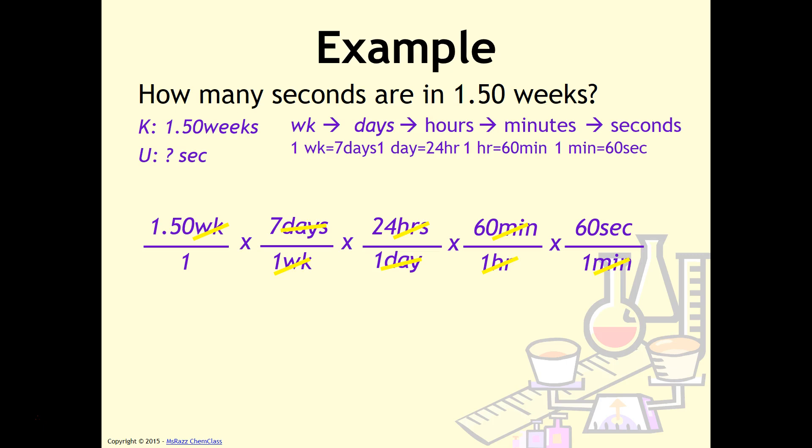Then you have to do your multiplication. So I'm going to multiply everything on top and then divide by everything on bottom. Fortunately, everything on the bottom is one. So that'll make this calculation fairly simple. And that will be my answer.